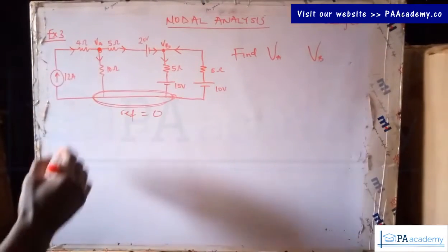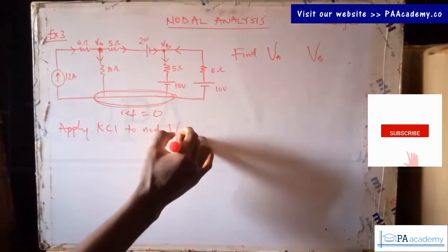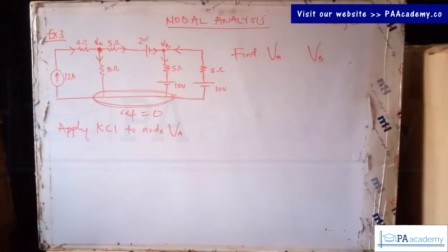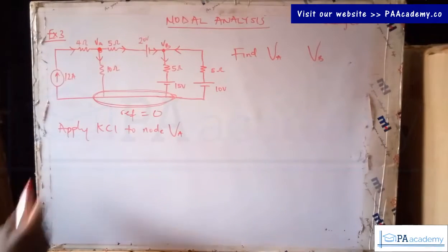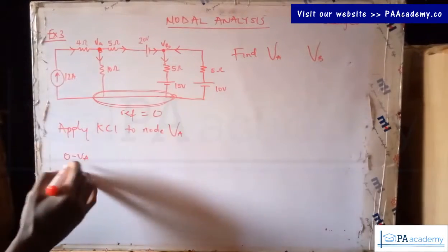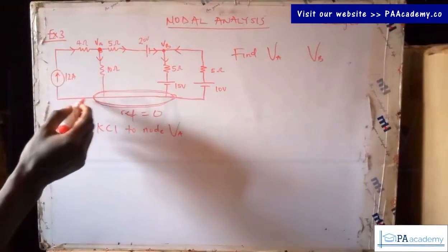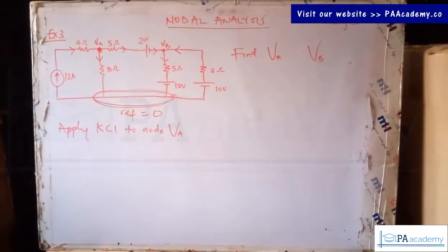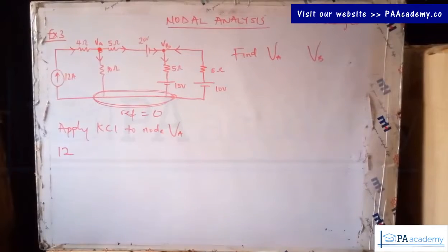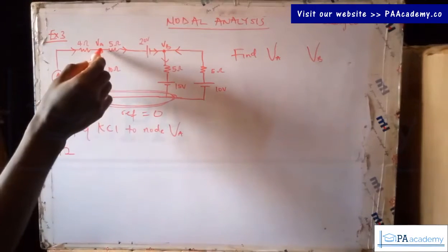That means for node Va we have just one incoming current coming through this branch, and it's leaving through these two branches as outgoing. For node Vb we have two incoming and one outgoing. Since we are having two nodes, we pick them one after the other. So now let's apply Kirchhoff's Current Law to node Va. There's no need to write zero minus Va over four — because we already have a current of 12 amps on this branch, so we write it directly as 12.